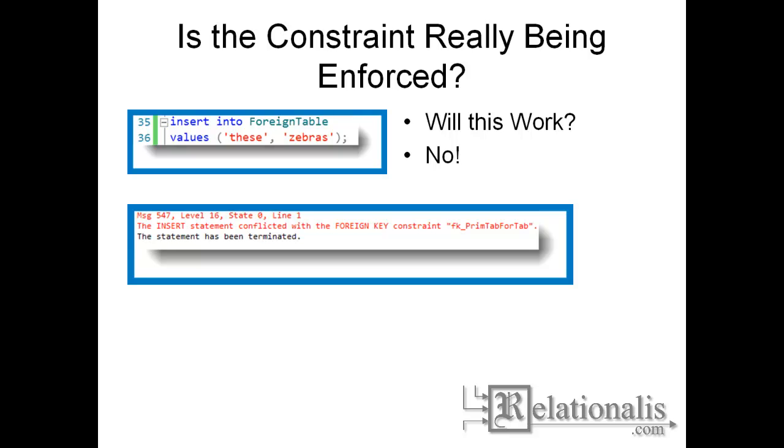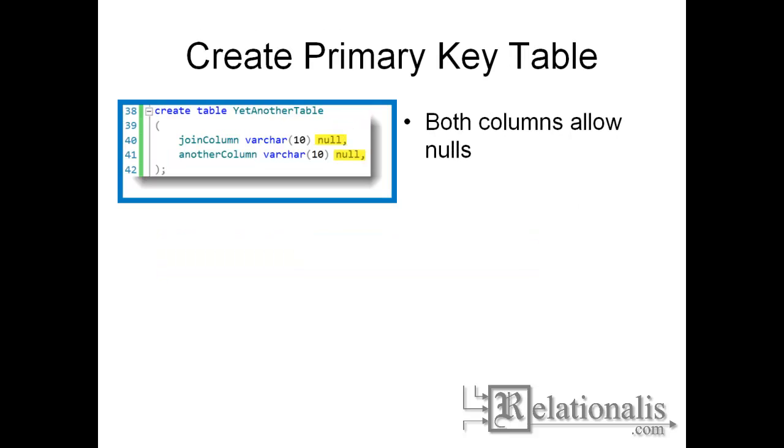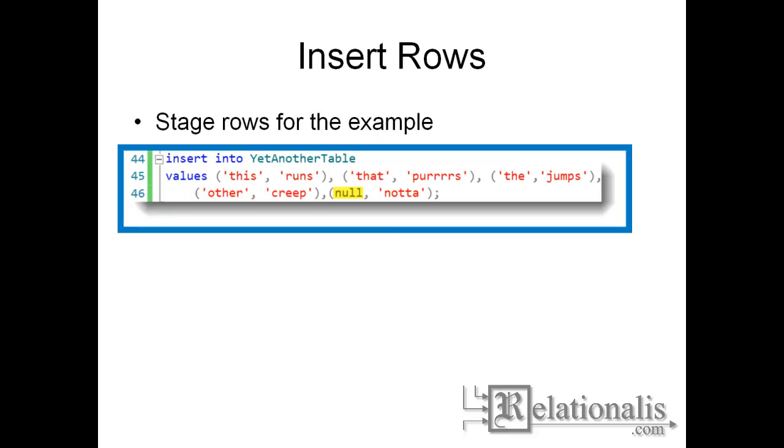As one more example, we will create a third table to be used in a join. Again, we will insert staging rows into this new table. Note that we are inserting a null value into this new table. This table is not key to either of the other two.